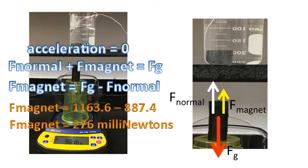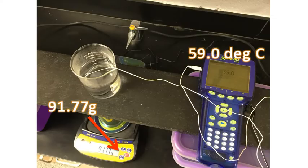Rearranging the equation, we could solve for the magnet force. That's the force of gravity subtract the normal force. So, in this situation, after doing all the math, taking our numbers, we get a magnet force of 276 millinewtons. So, here's our first data point. 59 degrees Celsius, 91.77 grams.